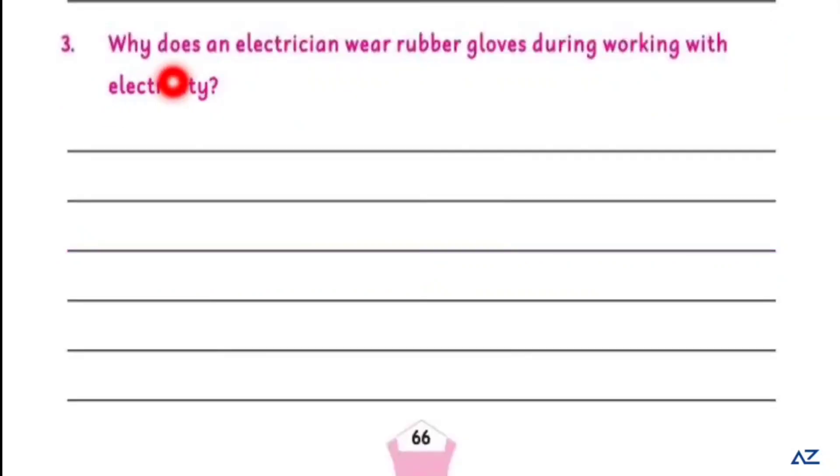The next question number three is: why does an electrician wear rubber gloves during working with electricity? As rubber is a bad conductor of electricity, so it does not allow the electric current to pass through it. The rubber gloves will save the electrician from any electric shock during working. Rubber gloves, which is a bad conductor like insulator, electricity doesn't pass through.